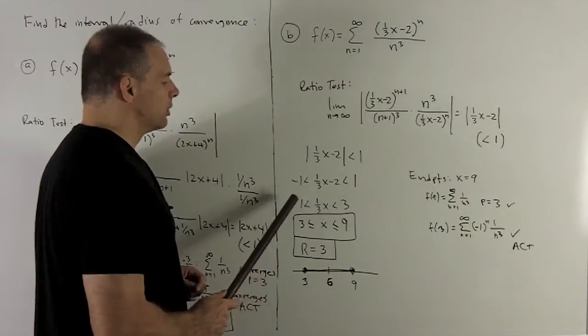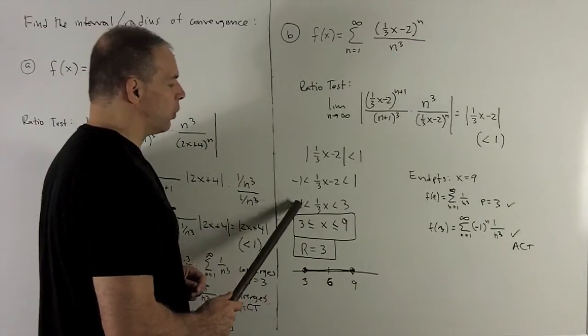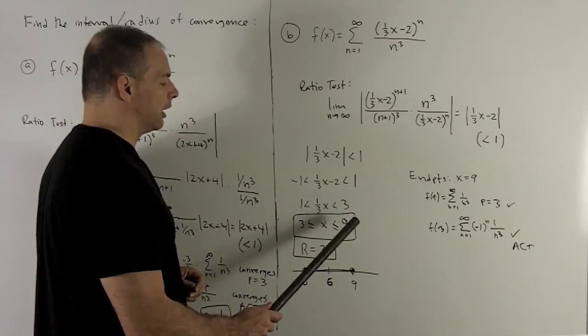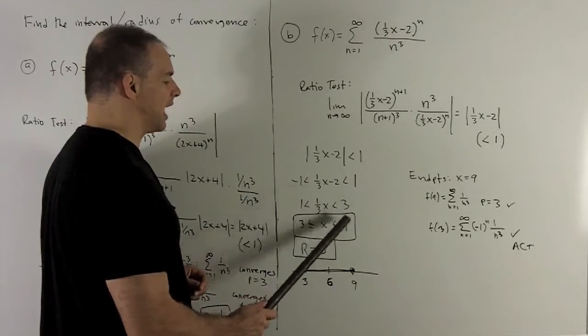So what do we do? I want to get rid of the minus 2. So I add a 2 to both sides. That gives me a 1 going to 3. And then we want to get rid of the 3. So I multiply everything through by 3. And that will give me 3 strictly less than x, strictly less than 9.